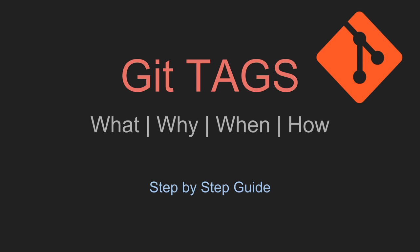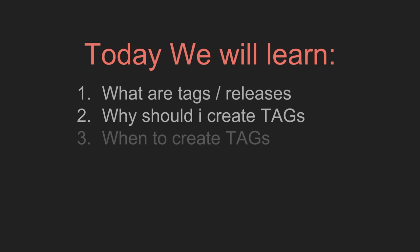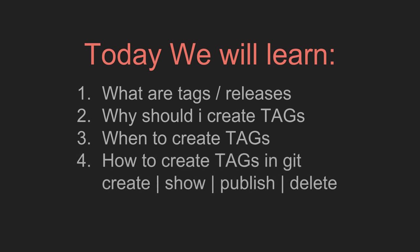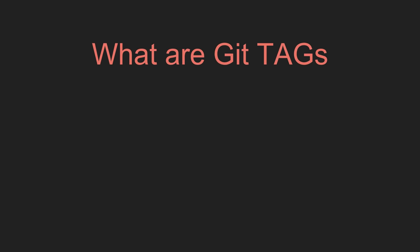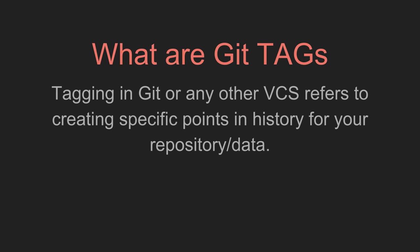Hello and welcome to this session on Git tags. Today we will learn about tagging in Git and also see a basic step-by-step guide on how to create, show, publish and delete tags in Git. In Git or in any other version control system, tagging is a process whereby we can mark or create specific points in the history of our project or repository.